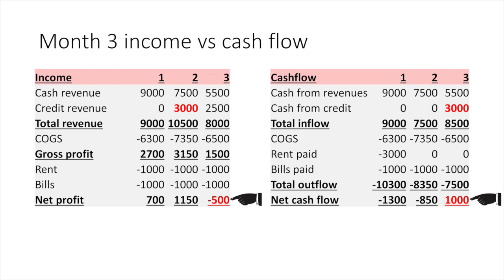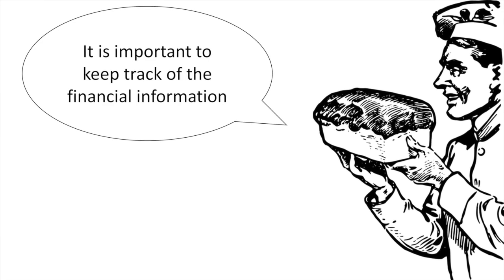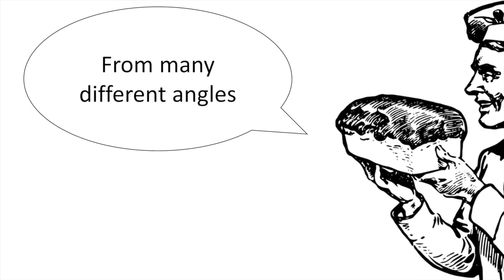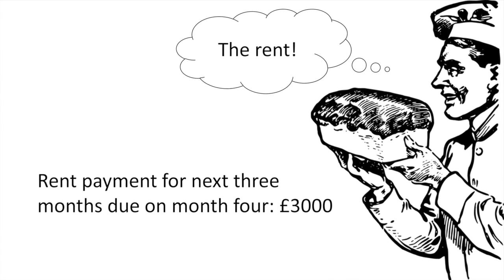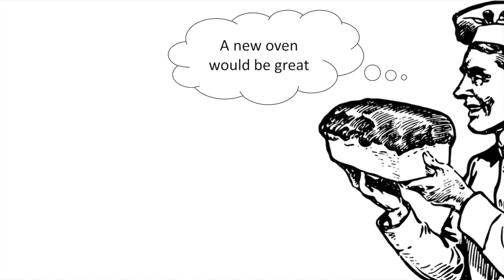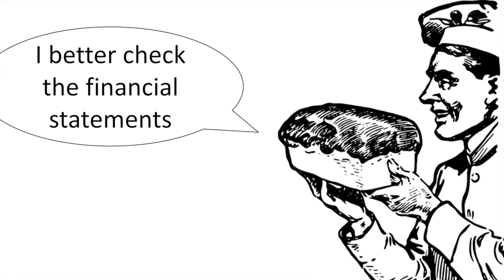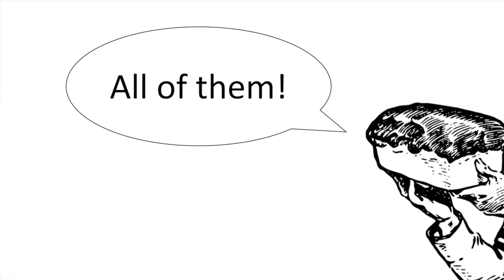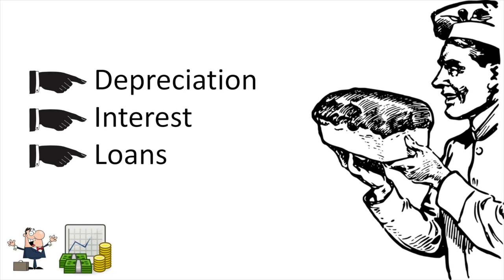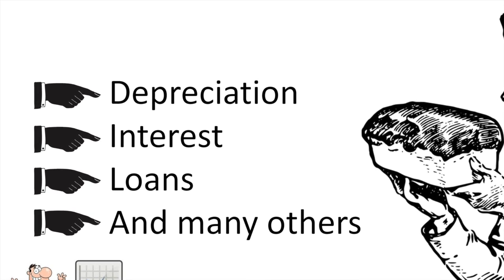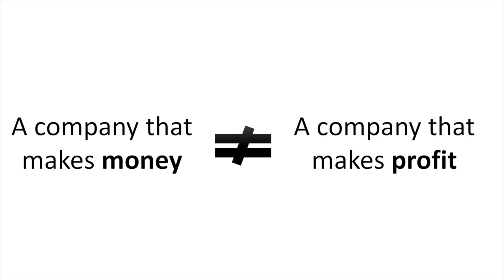At this point you're starting to realize the importance of keeping track of financial information in many different angles. In John's bakery, he made more profit than losses, but he lost more cash than he made. John is going to have to pay rent again in month 4 — another £3,000. How can he make sure he will have enough money? Is it a good idea to buy a new industrial oven now? To answer all these questions, it's necessary to analyze the financial information in many different ways. When you add depreciation, interest, loans, and many other financial features, there is no way of keeping track without an advanced set of sheets to help you. Just remember this one thing: in the end, a company that makes money has nothing to do with a company that makes profit.